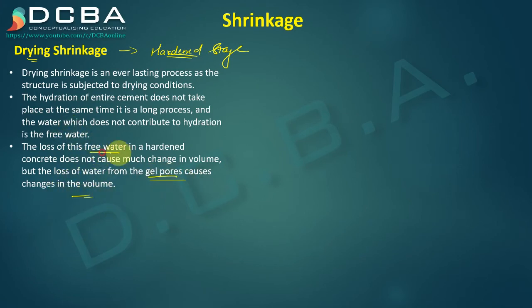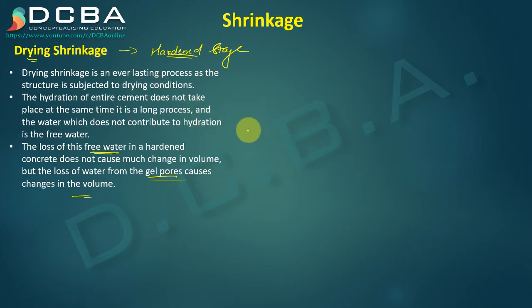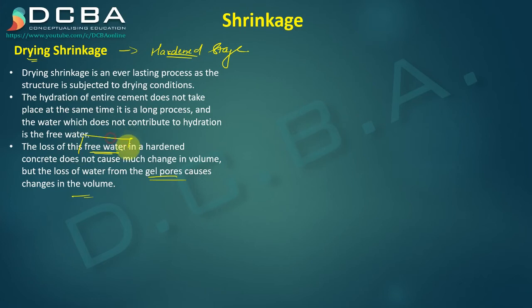As discussed in the previous lecture on creep, a cement paste consists of unhydrated and hydrated cement grains. In the hydrated cement grains, there are gel pores and cavities. The free water is lodged in the cavities. In the gel pores there is also gel water, and if that gel water is lost, volume reduction of the paste occurs.